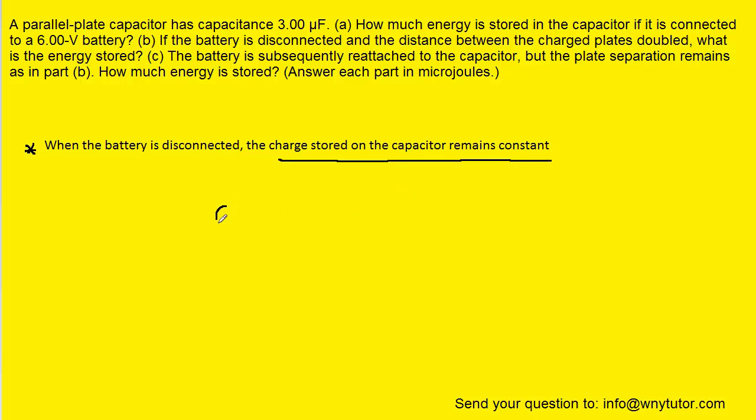So that means that whatever charge Q was present originally on the capacitor will remain on the capacitor even when the battery is disconnected. Now, we know that charge is equal to capacitance multiplied by the potential difference. Remember that the capacitance was three microfarads and then the potential difference was the six volts.